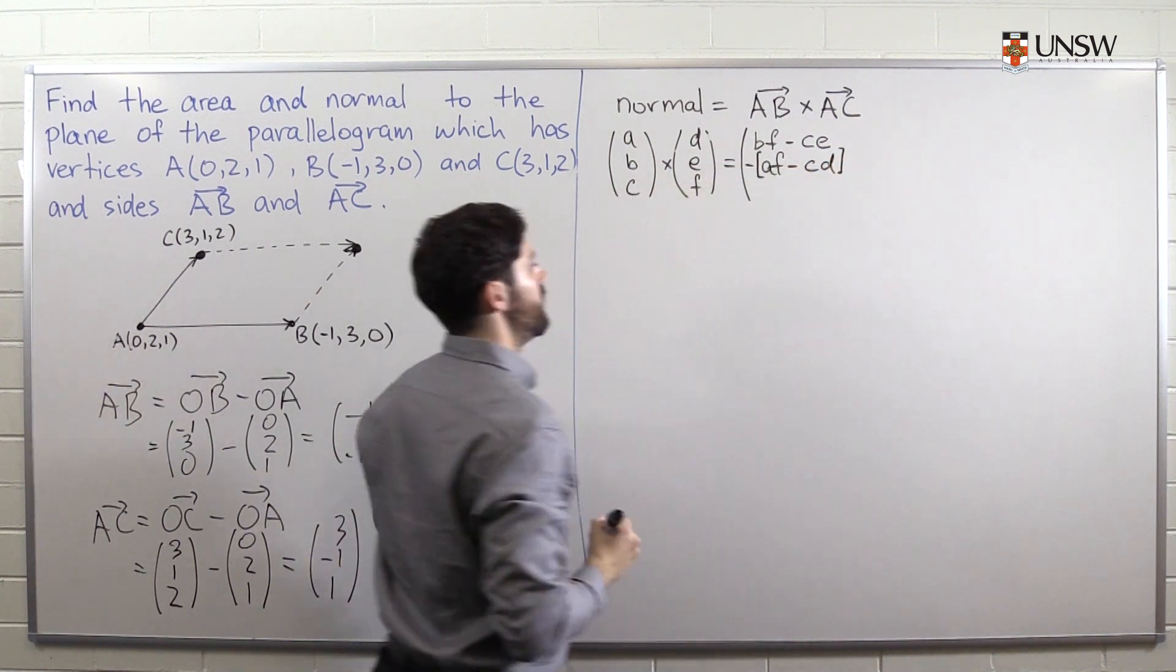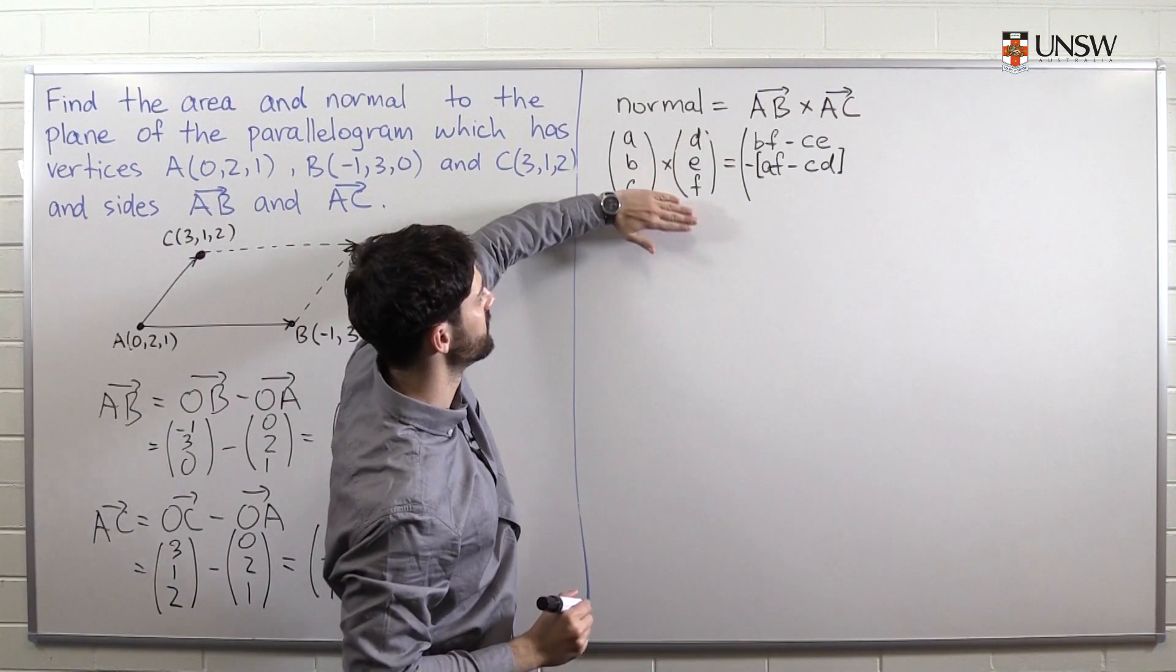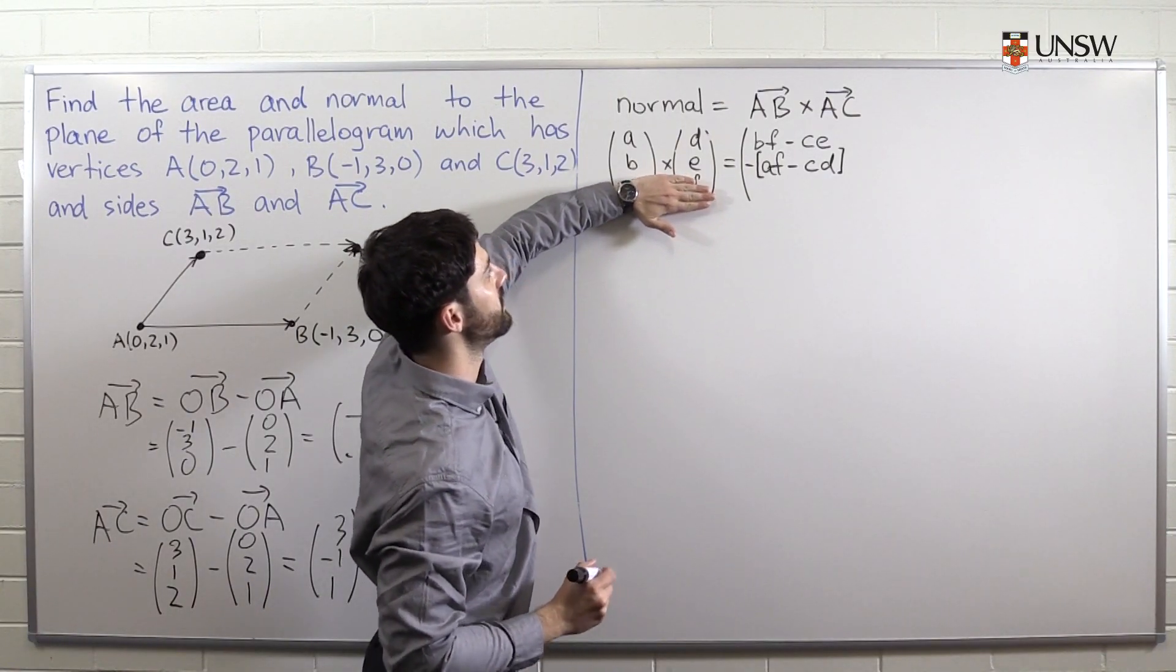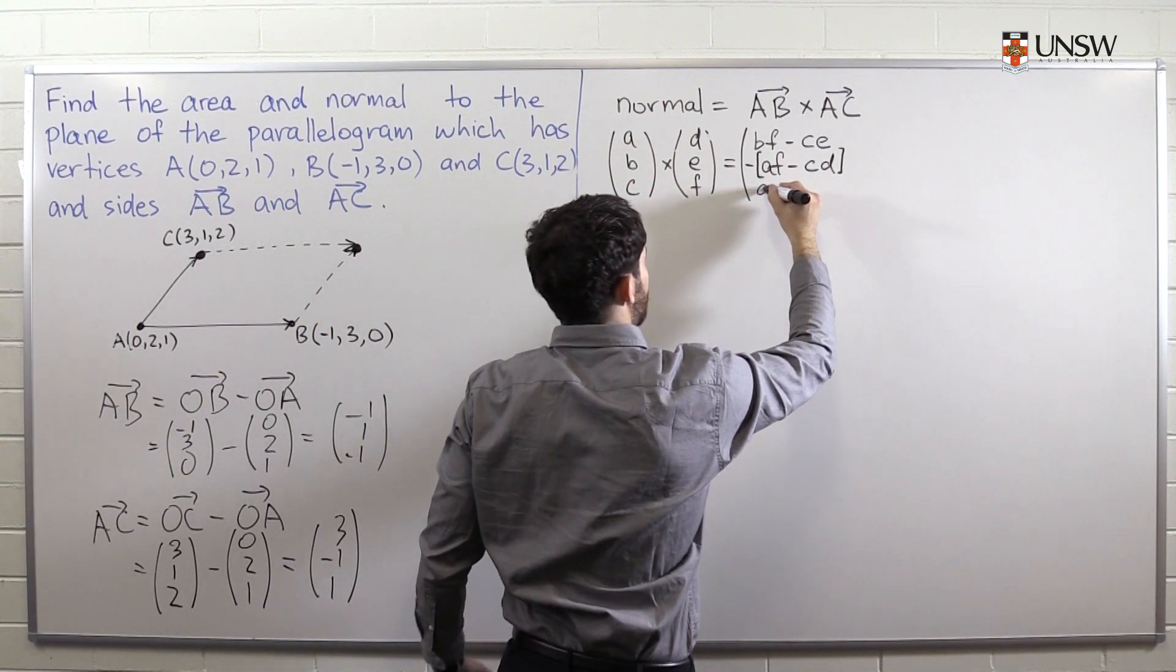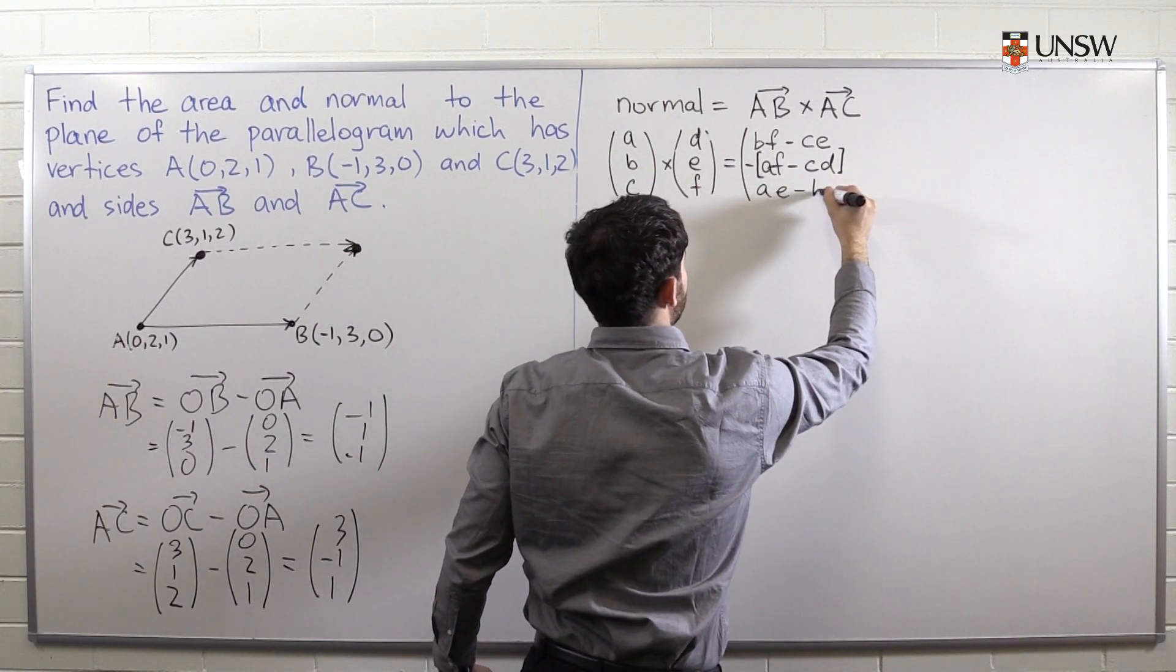And finally, to find the last component of the vector, we ignore the last row. We are left with a, e, and b, d. So ae minus bd.